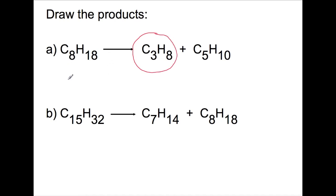So in this first reaction here, our product that's been circled in red has three carbons and it has eight hydrogens. This makes this an alkane as the number of hydrogens is double plus two of the number of carbons.